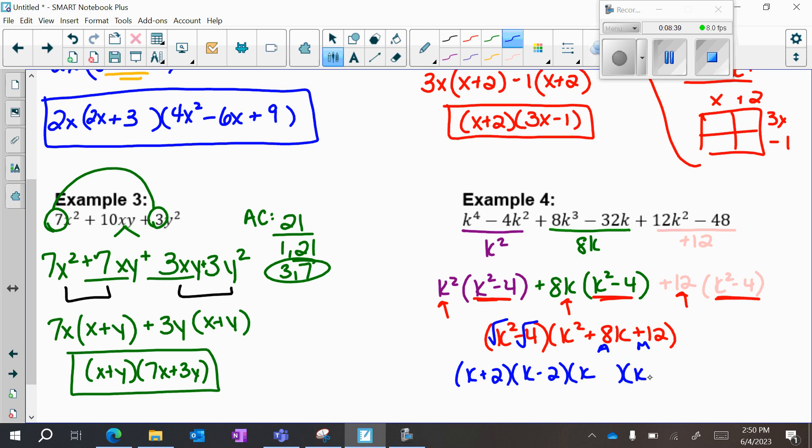Each parentheses gets a k. Bring down my first sign, positive times a positive is a positive. I want to multiply to 12, so my options are 1 and 12, 2 and 6, or 3 and 4. I'm looking to combine or add to 8. So that's going to be 6 and 2. Bigger number comes first.